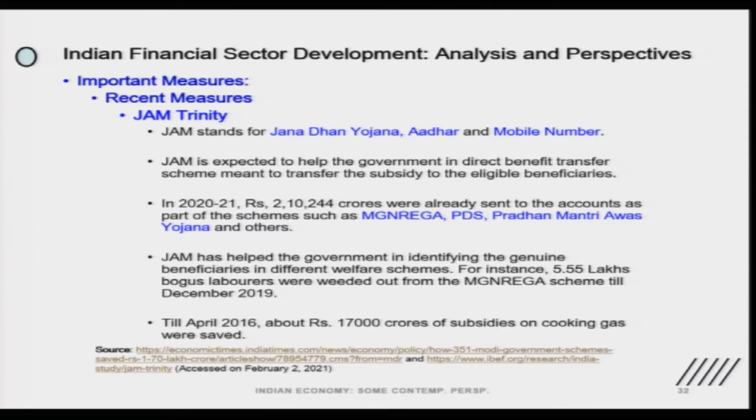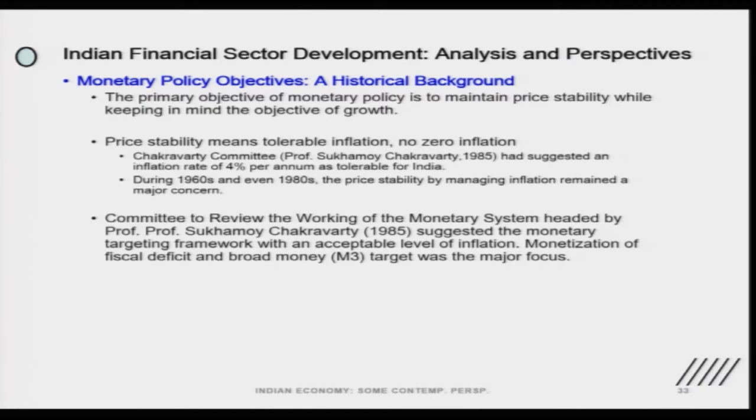If somebody asks what the JAM Trinity is, you should be able to answer. This completes the financial inclusion chapter. Now I will be moving to the new topic. The financial sector is over, and if I am left with any topic I will cover it towards the end of this course. Now we will be moving to the monetary policy, then after that I have to cover the fiscal policy, the recent changes in fiscal policy, then we will have the WTO issues, and then we will conclude this course. The monetary policy objectives — since we are dealing with India's economy and have covered the historical aspect of each and every policy — it is important that we cover monetary policy and provide some background of what this policy is all about.